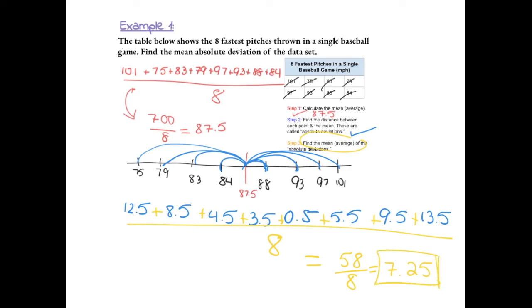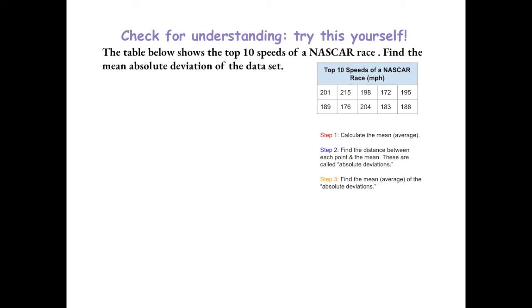So our mean absolute deviation is 7.25. Something with a lower MAD has less variety in the data, and something with a higher MAD has greater variety in the data. Follow the steps to try this one yourself to check for understanding, then check your answer with the next portion of the video.